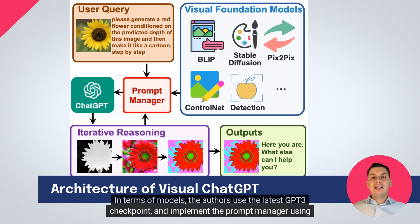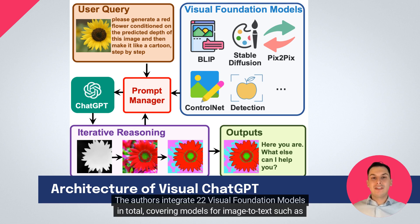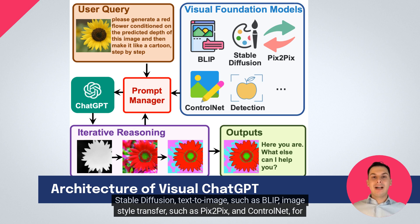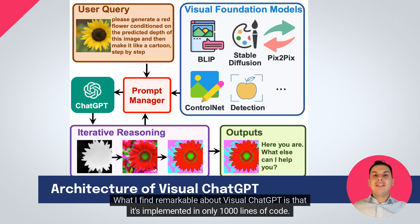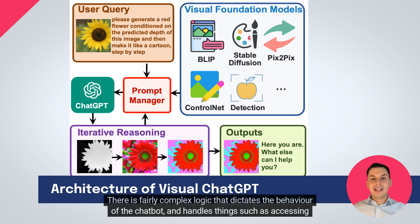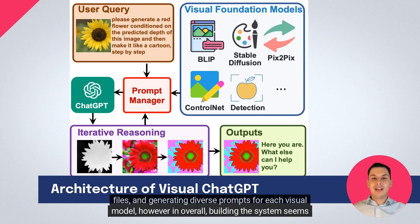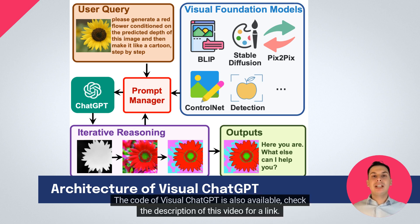In terms of models, the authors use the latest GPT-3 checkpoint and implement the prompt manager using the LangChain library. The authors integrate 22 visual foundation models in total, covering models for image-to-text such as Stable Diffusion, text-to-image such as BLIP, image style transfer such as Pix2Pix, and ControlNet for fine-grained image synthesis. All of these models are accessible by ChatGPT, which can use and call them to manipulate and generate images as needed. What I find remarkable about Visual ChatGPT is that it's implemented in only 1,000 lines of code. There is fairly complex logic that handles things such as accessing files and generating diverse prompts for each visual model, but overall, building the system seems to be relatively straightforward. The code of Visual ChatGPT is also available — check the description of this video for a link.